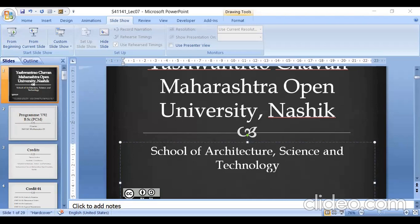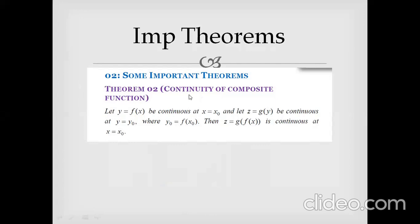So functions g and f are separately continuous, and the composite function g(f(x)) is also continuous at x₀. We need to understand this diagrammatically. Let y = f(x) be continuous at x = x₀ and z = g(y) be continuous at y = y₀. Then the composite function z = g(f(x)) is continuous at x = x₀.